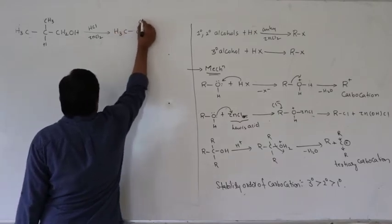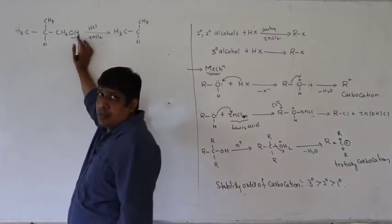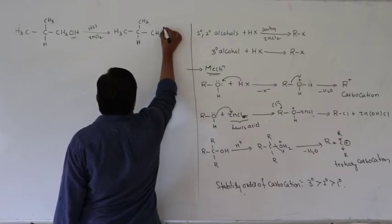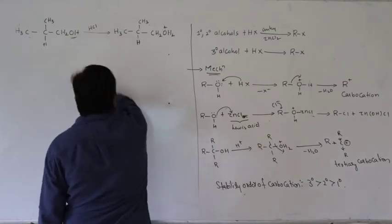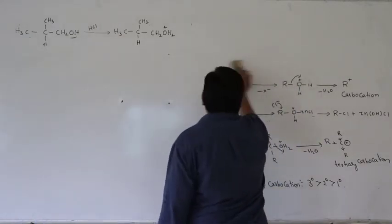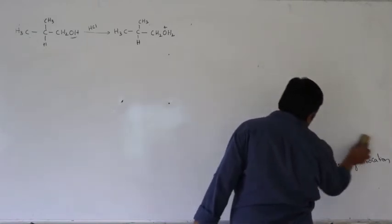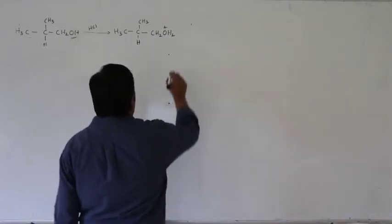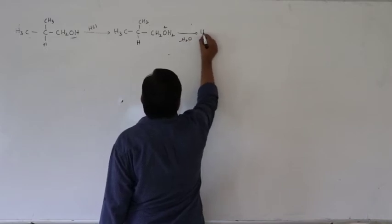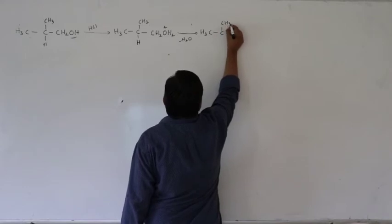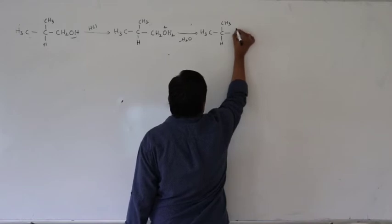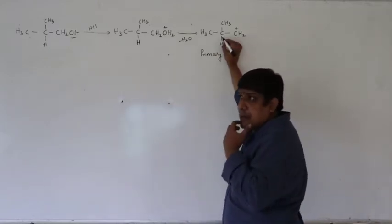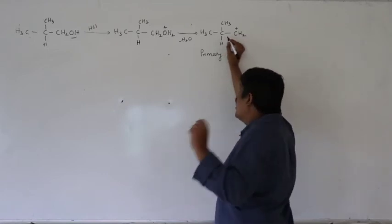Let us take one example. This is a primary alcohol reacting with HCl plus zinc chloride. What we get is a carbocation. Removal of the OH group as water after protonation gives a primary carbocation — carbon bonded to only one other carbon, carrying a positive charge. Therefore, we call it a primary carbocation.